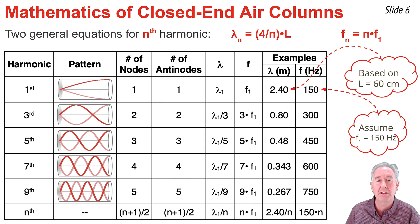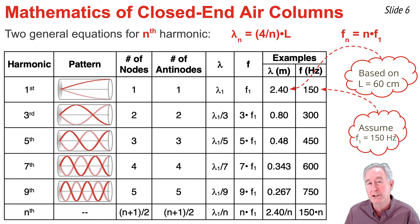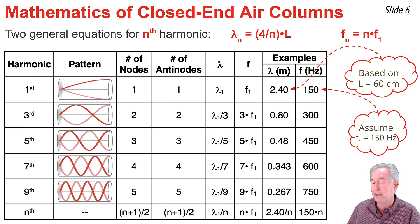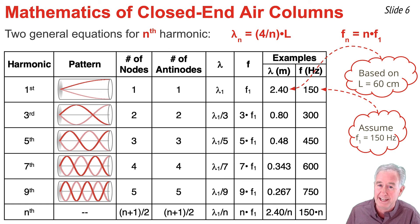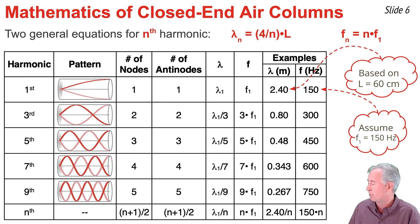As examples, consider two columns from our table. The column labeled wavelength assumes the length of the air column is 60 centimeters. Using the equation, the wavelength of the first harmonic is (4/1) × 60 cm = 240 cm, or 2.40 meters. The wavelengths of the third, fifth, seventh, and ninth harmonics are 2.4 divided by 3, 5, 7, and 9 respectively (values shown are rounded). Assuming the frequency of the first harmonic is 150 hertz, we can calculate the frequency of any harmonic by multiplying by 3, 5, 7, and 9 to get the values shown in the table.